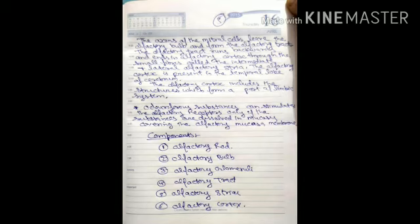The complete pathway of olfaction includes six components: olfactory rod, olfactory bulb, olfactory glomeruli, olfactory tract, olfactory striae, and olfactory cortex.